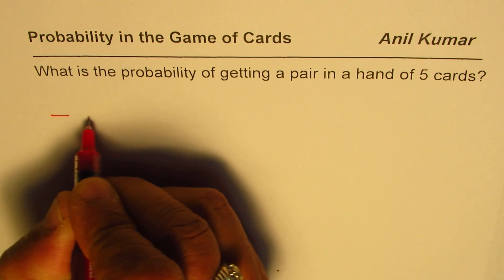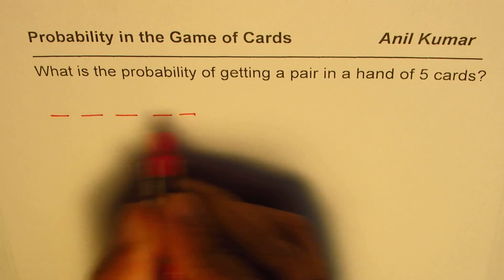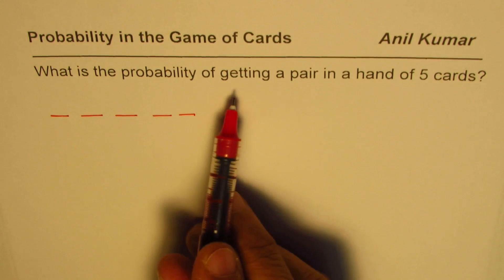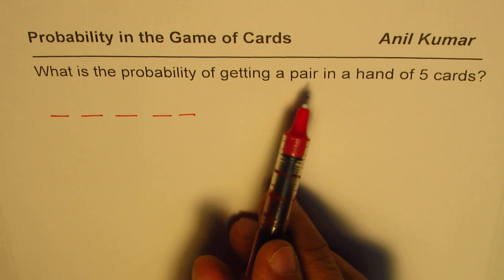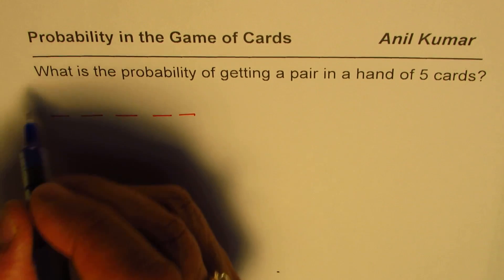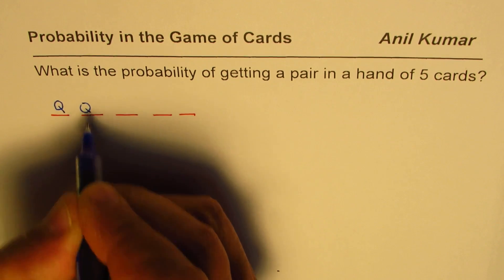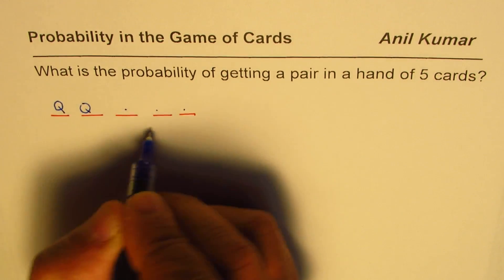So we are distributed or we choose five cards. Now out of these five cards, what is the probability of getting a pair? A pair means two of the same value. It could be, for example, two queens.